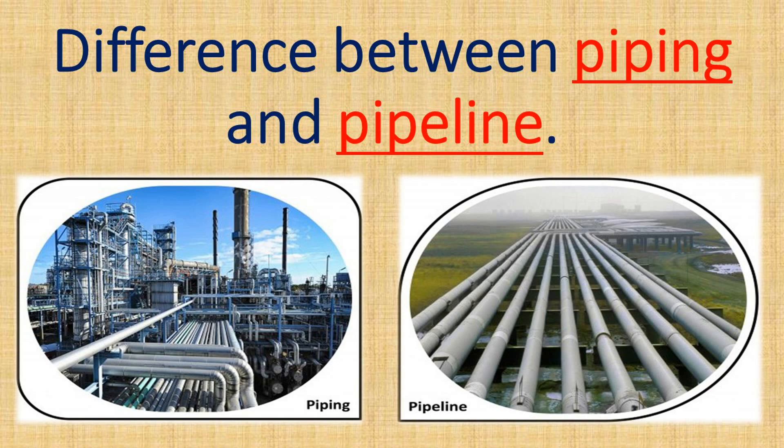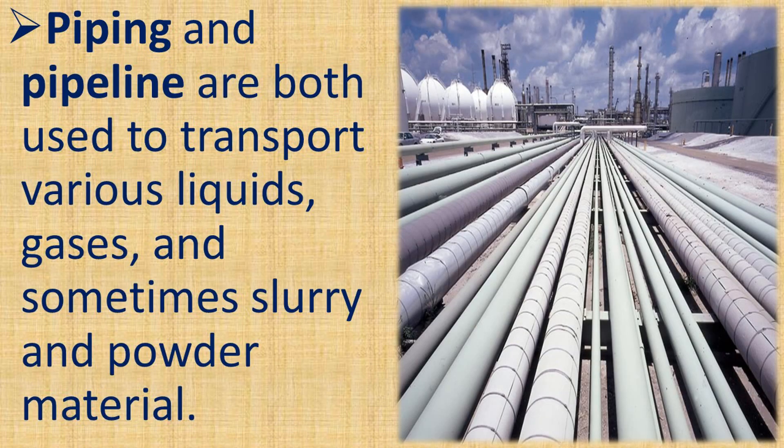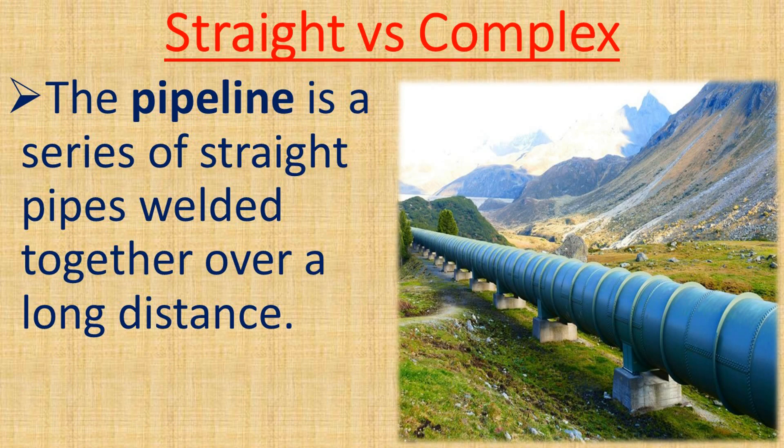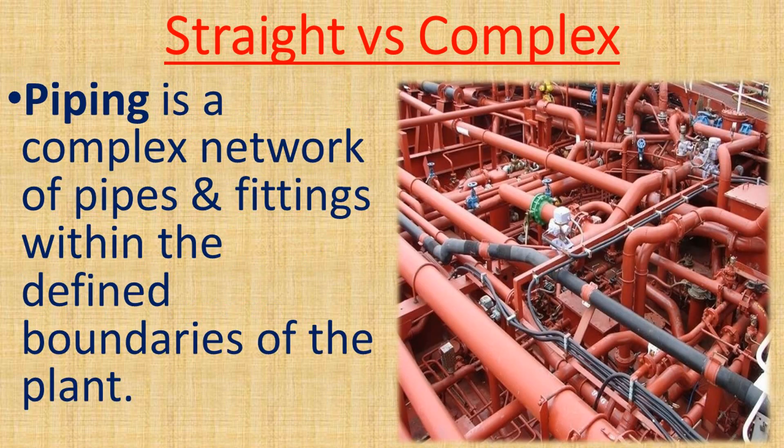The difference between piping and pipeline: piping and pipeline are both used to transport various liquids, gases, and sometimes slurry and powder material. A pipeline is a series of straight pipes welded together over a long distance, while piping is a complex network of pipes and fittings within the defined boundaries of a plant.